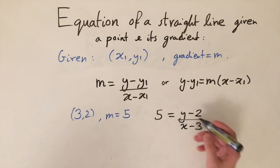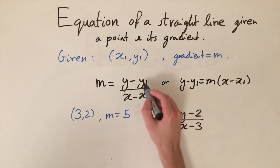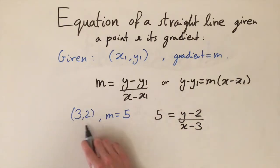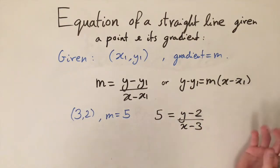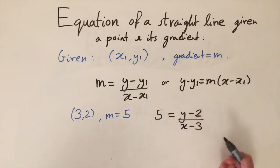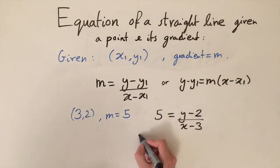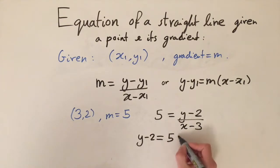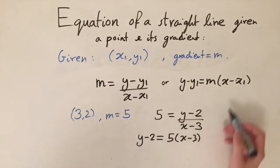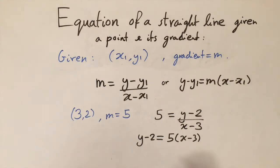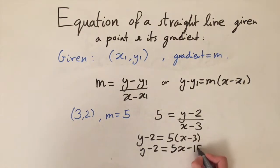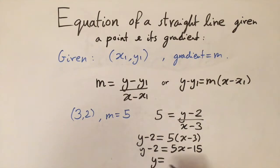We've left y and x as variables — these will form the equation — but for x1 and y1 we substitute the given numbers. Now it's just rearranging: multiply through by the denominator to get y minus 2 equals 5 times x minus 3. Expanding gives y minus 2 equals 5x minus 15. Moving the minus 2 to the right-hand side gives y equals 5x minus 13.